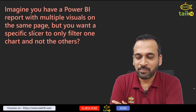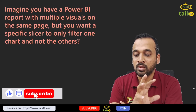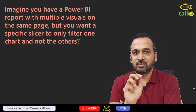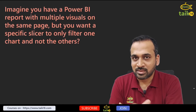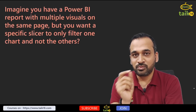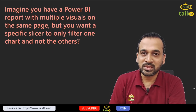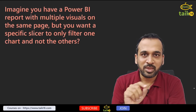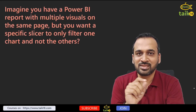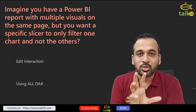The next scenario-based question: imagine you have a Power BI report with multiple visuals on the same page, but you want a specific slicer to filter one chart and not the other. How do you do that? I know two answers. First is Edit Interactions — you go to Format and then Edit Interactions, where you select which visuals you want filtered. The second option is to use a DAX function: if these things are filtering via a relationship, you can use a DAX calculation that references all regions, so that visual returns all values without any filter applied.